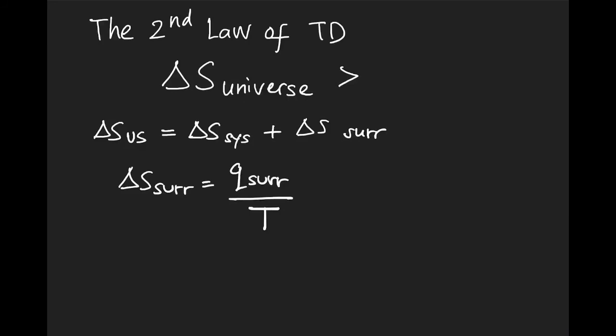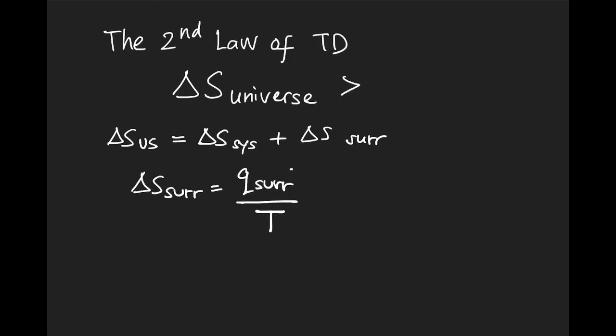And if this is a reaction that occurs at constant pressure, we can tell that the Q of the surrounding is actually minus Q of the system. If this occurs at constant pressure, then this is the same as minus delta H of the system. So delta S of the surrounding equals minus delta H of the system divided by the temperature.